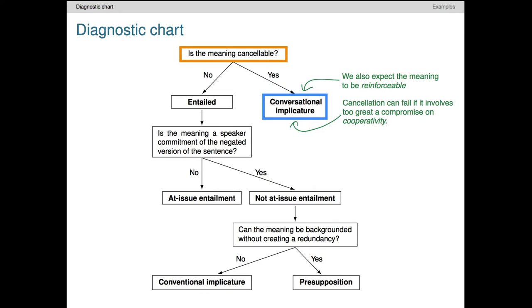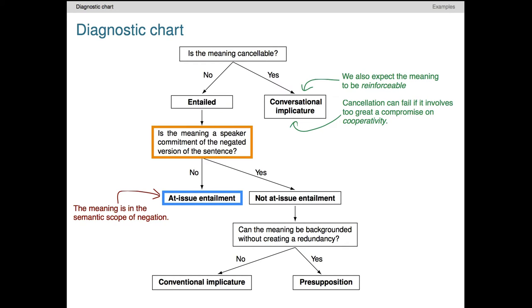It's also worth noting that we might at some point need to expand this node to distinguish other kinds of pragmatic meaning. Now, if the meaning we're interested in isn't cancelable, then we move to this entailed node. And the question we ask is whether the speaker remains committed to the meaning even after the original sentence is negated. If the answer is no, then the test is revealing to us that the meaning is in the semantic scope of this negation. That leads us to call it an at-issue entailment. It's likely part of the primary message of the utterance, the content the speaker is putting forth for inclusion into the common ground.